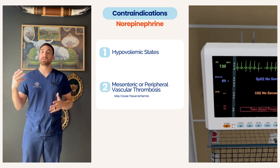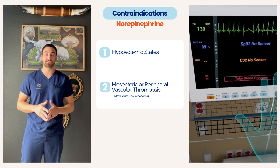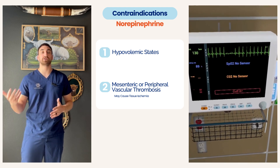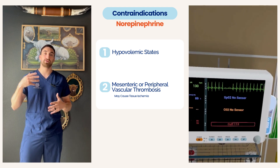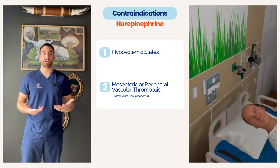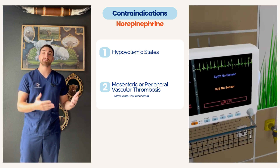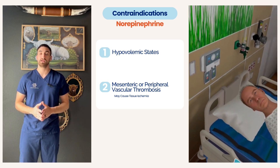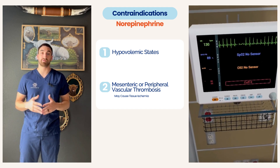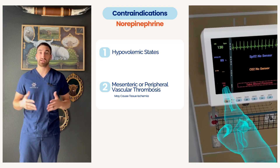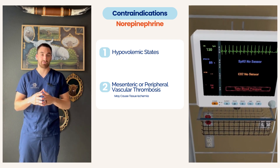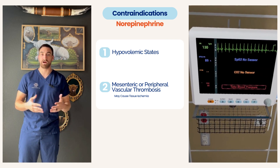One contraindication is starting a vasopressor without trying fluid resuscitation first for most patients, because we want to test whether hypovolemia — low volume in the vascular space — is actually causing the hypotension. If we skip that step and go straight to a vasopressor, we're not fixing the underlying issue. Another contraindication is mesenteric or peripheral thrombus formation. Causing vasoconstriction could decrease circulation below that limb, or in the case of the mesenteric artery, cause gangrene of the bowel by further restricting circulation around an existing clot.